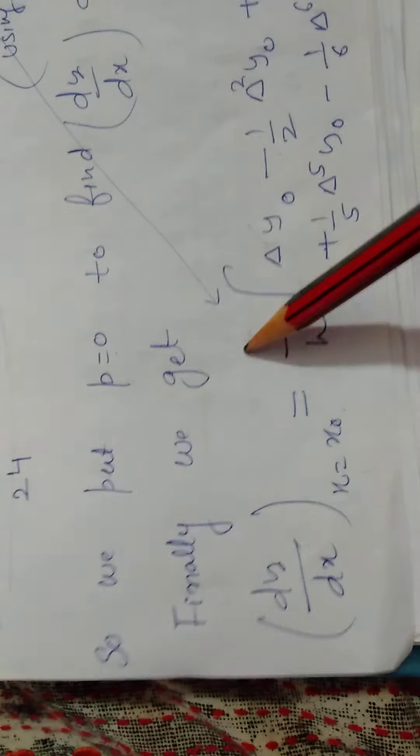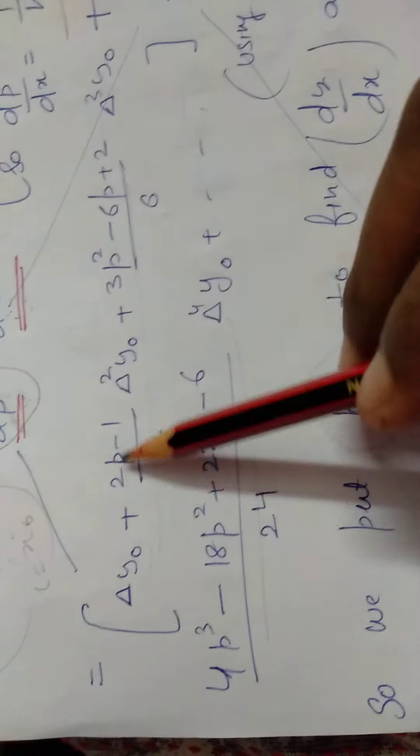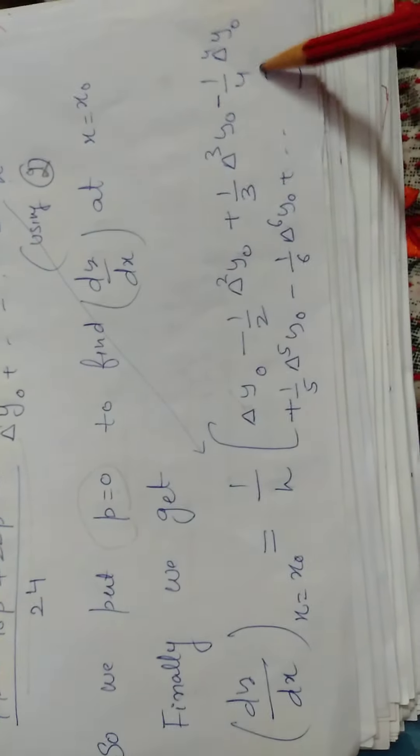Previously we calculated dy by dp into dp by dx which is 1 by h. So this 1 by h shifts forward, and in all these calculations wherever is P, put P equals 0. This will give us the formula for the first derivative.